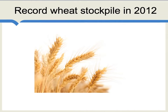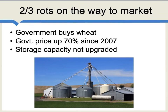Now let's look at what is both some good news and some bad news. The good news is that in the year 2012, there was in fact a record wheat stockpile in India. The bad news is that at least two-thirds of this crop rots on the way to market — and if anything, that two-thirds is probably an underestimate.